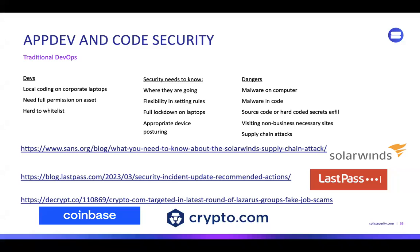Lazarus — they actually did fake HR campaigns and took down a major crypto company. The developer thought he was going to get a job. They sent him a PDF file that was laced, and they were able to compromise all the crypto keys for moving money through an exchange. Important — we lock these things down.